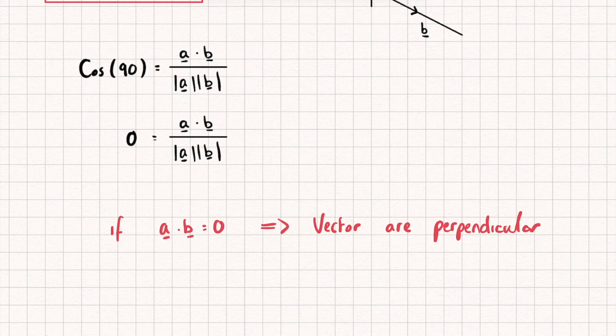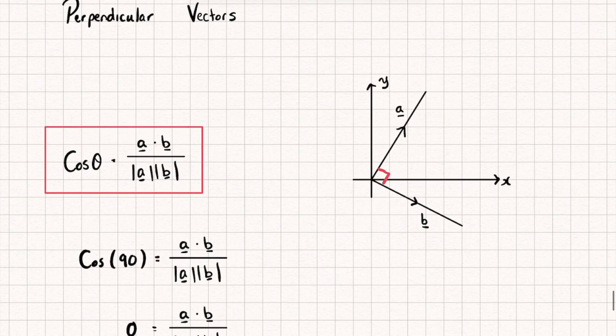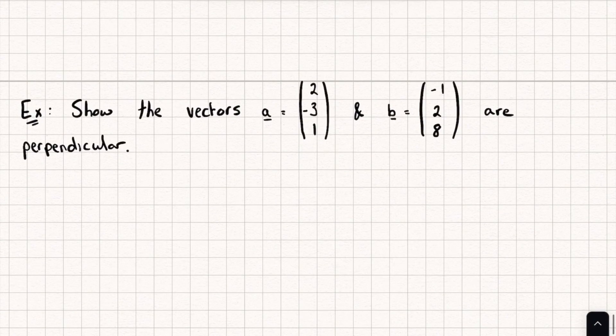Let's take a look at this in an example question. But really all this means is, say we want to prove that these two vectors are perpendicular, I don't really need to worry about this whole formula. All I need to do is calculate a dot b, and if it's equal to zero, I know that they're perpendicular.